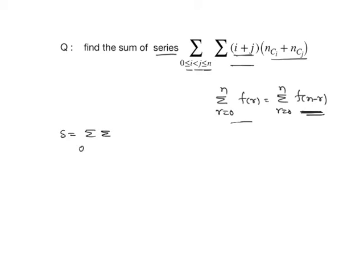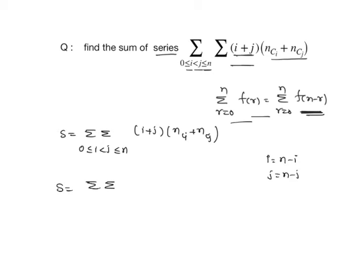S equals sigma sigma, 0 ≤ i < j ≤ n, (i+j)·nCi·nCj. Applying the symmetry property, we replace i with (n-i) and j with (n-j), so S equals sigma sigma, 0 ≤ i < j ≤ n, of (n-i + n-j) times nC(n-i) plus nC(n-j).